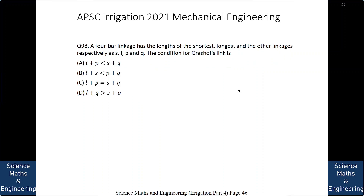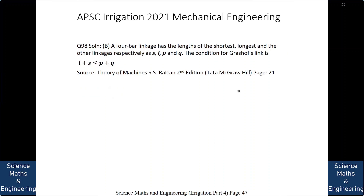A four-bar linkage has the shortest link S, longest link L, and the other two links P and Q. The condition for Grashof's link is: A. L + P < S + Q, B. L + S < P + Q, C. L + P = S + Q, or D. L + Q > S + P. The answer is B: L + S ≤ P + Q, meaning the longest link plus the shortest link must be less than or equal to the sum of the other two links.